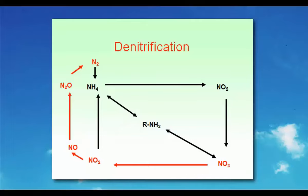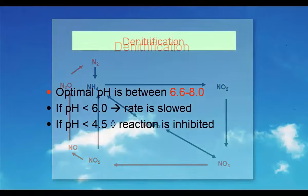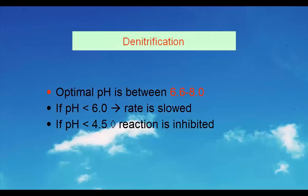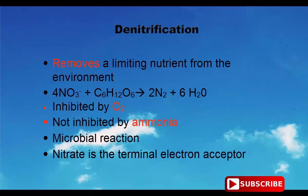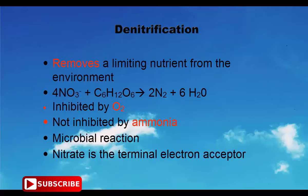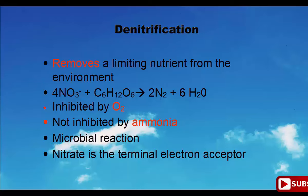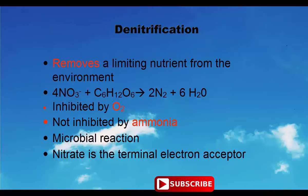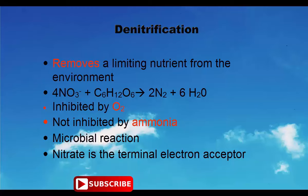Denitrification has an optimal pH between 6.6 and 8.0 and removes a limiting nutrient from the environment. The equation is: 4NO3- + 6C6H12O6 → 2N2 + 6H2O. Denitrification is inhibited by oxygen (O2) but not inhibited by ammonia. It is a microbial reaction where nitrate is the terminal electron acceptor.